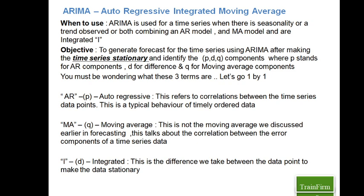AR stands for Autoregression, MA is Moving Average, and I stands for Integrated. The objective of ARIMA is basically to predict the future values of your time series by making your data stationary. I've highlighted the phrase 'time series stationary' because it is key to this method.